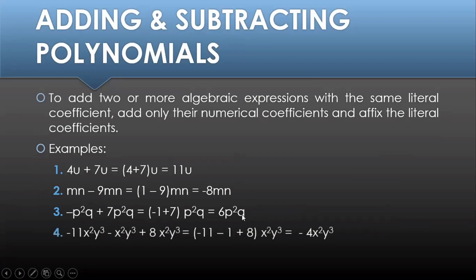Lastly, we have negative 11x squared y cubed minus x squared y cubed plus 8x squared y cubed. Let us take all the numerical coefficients: negative 11, negative 1, and 8. So that gives us negative 11 minus 1 plus 8, which equals negative 4x squared y cubed. Always remember that we can only add and subtract similar or like terms together.